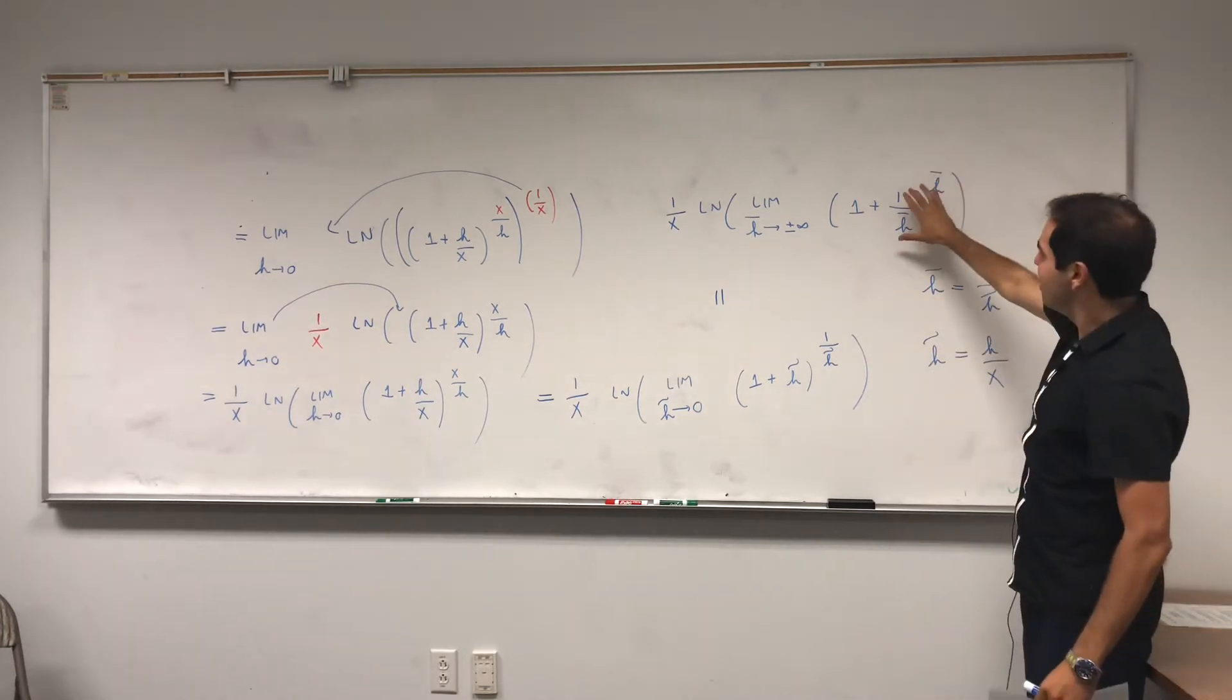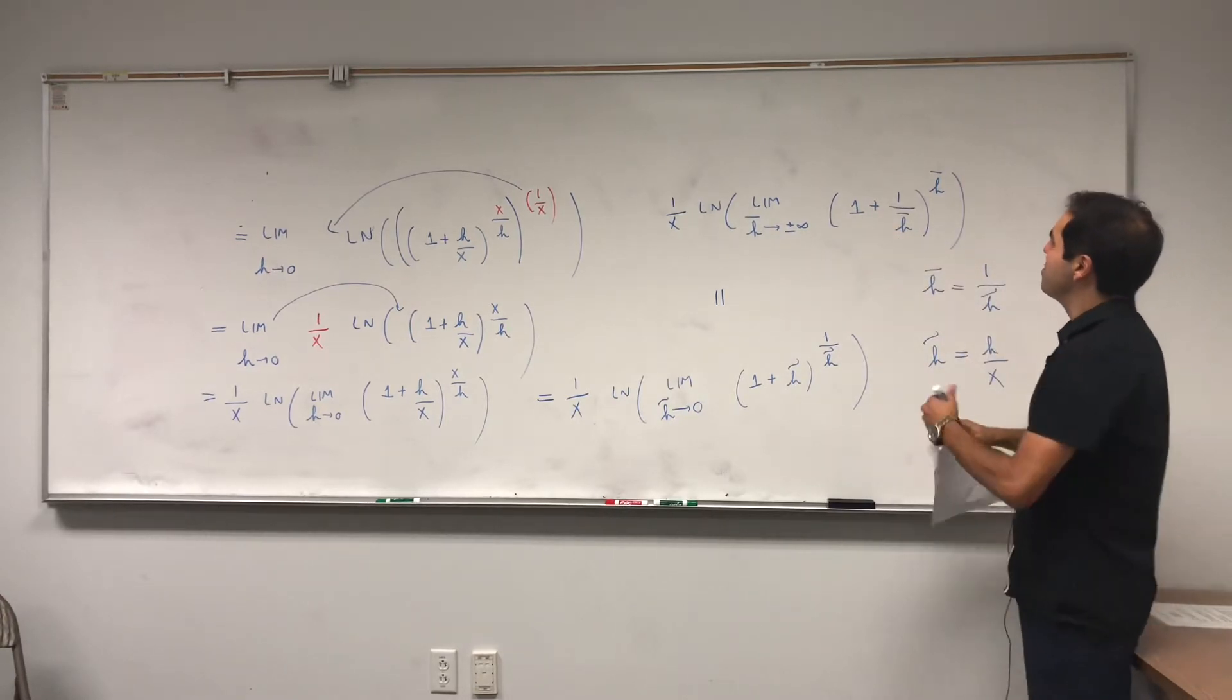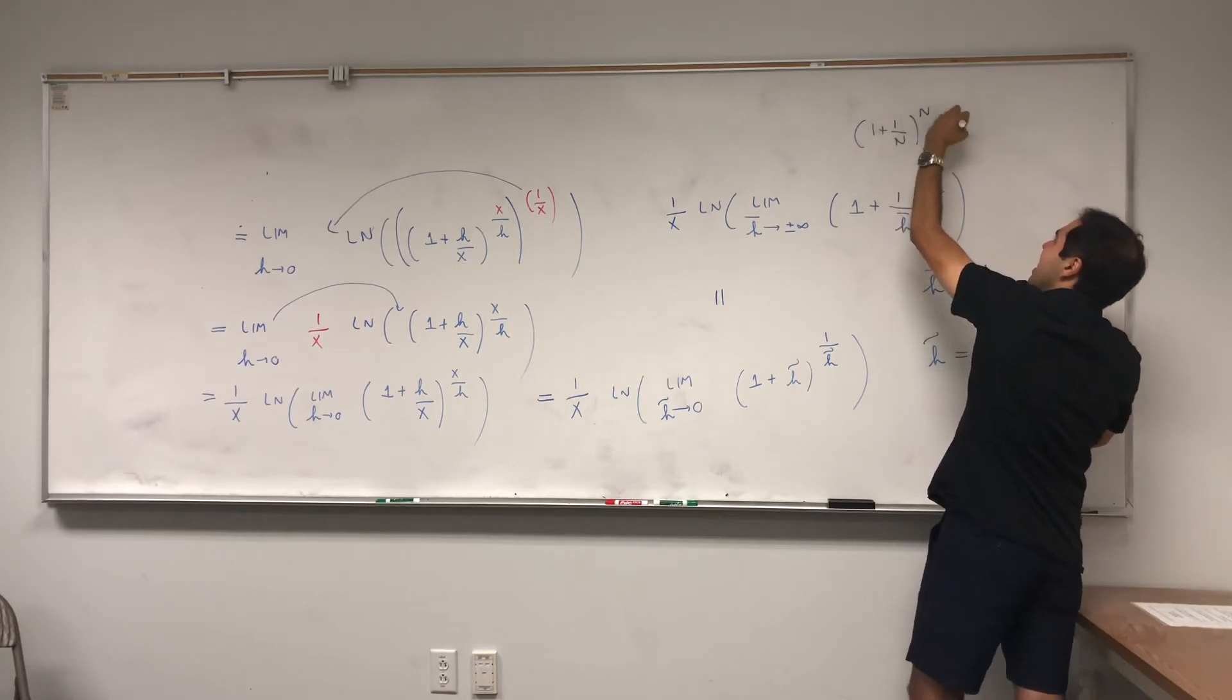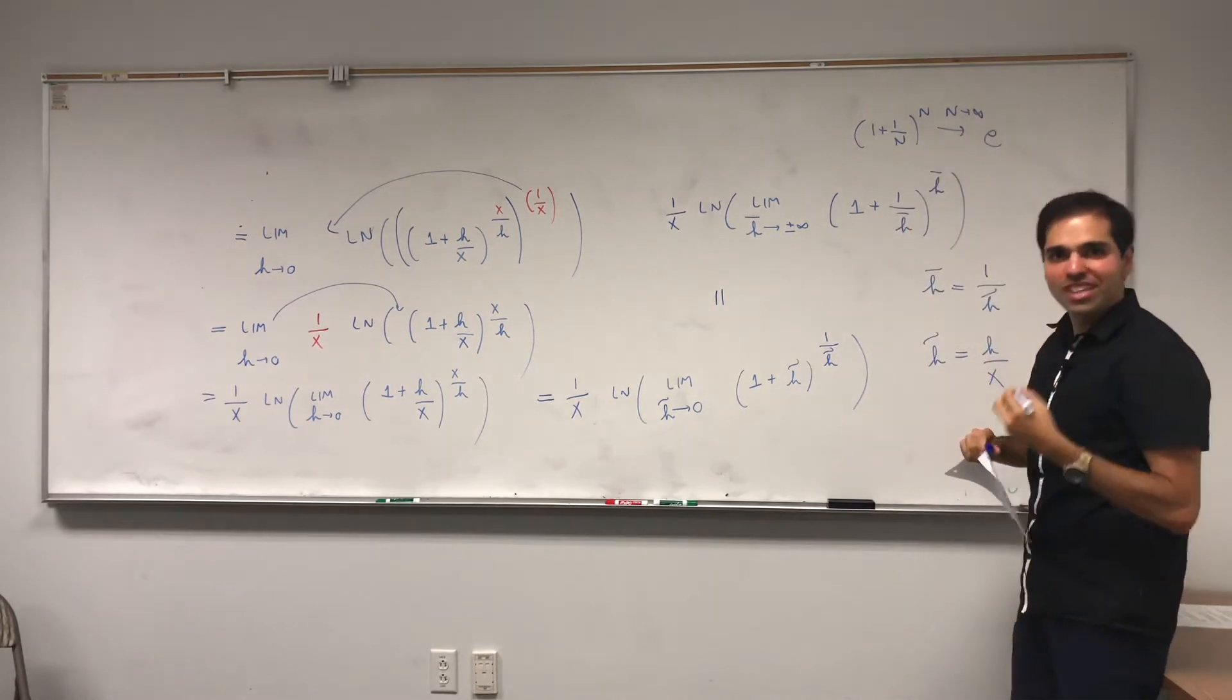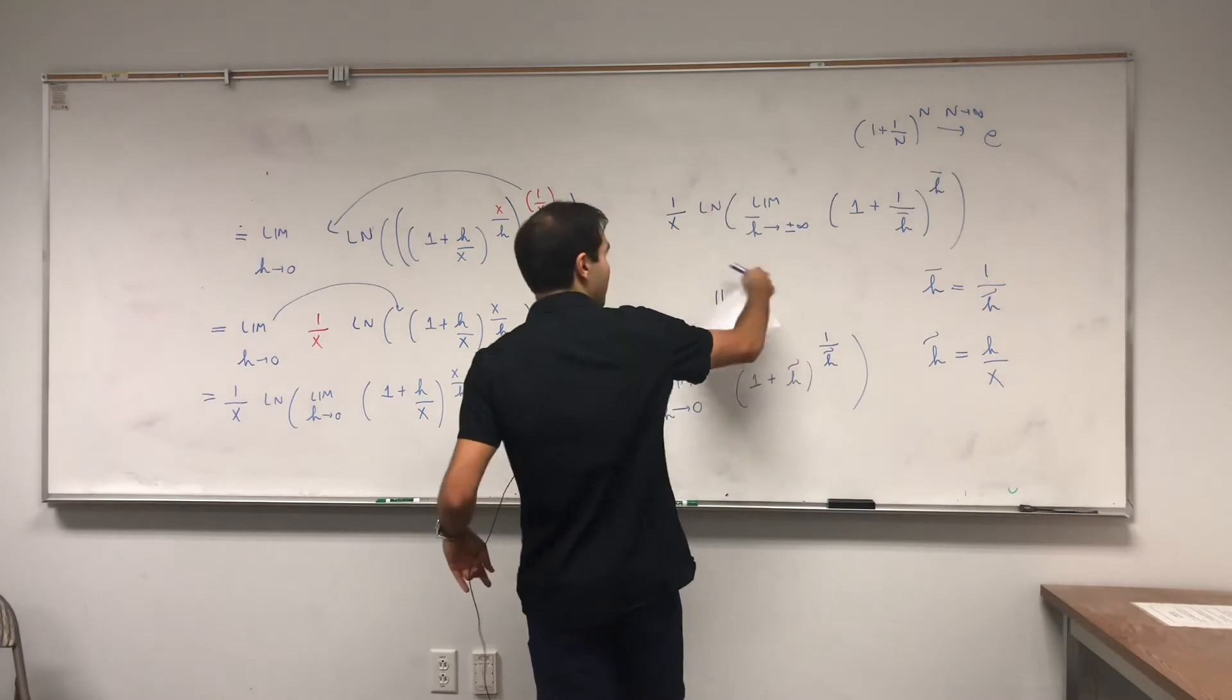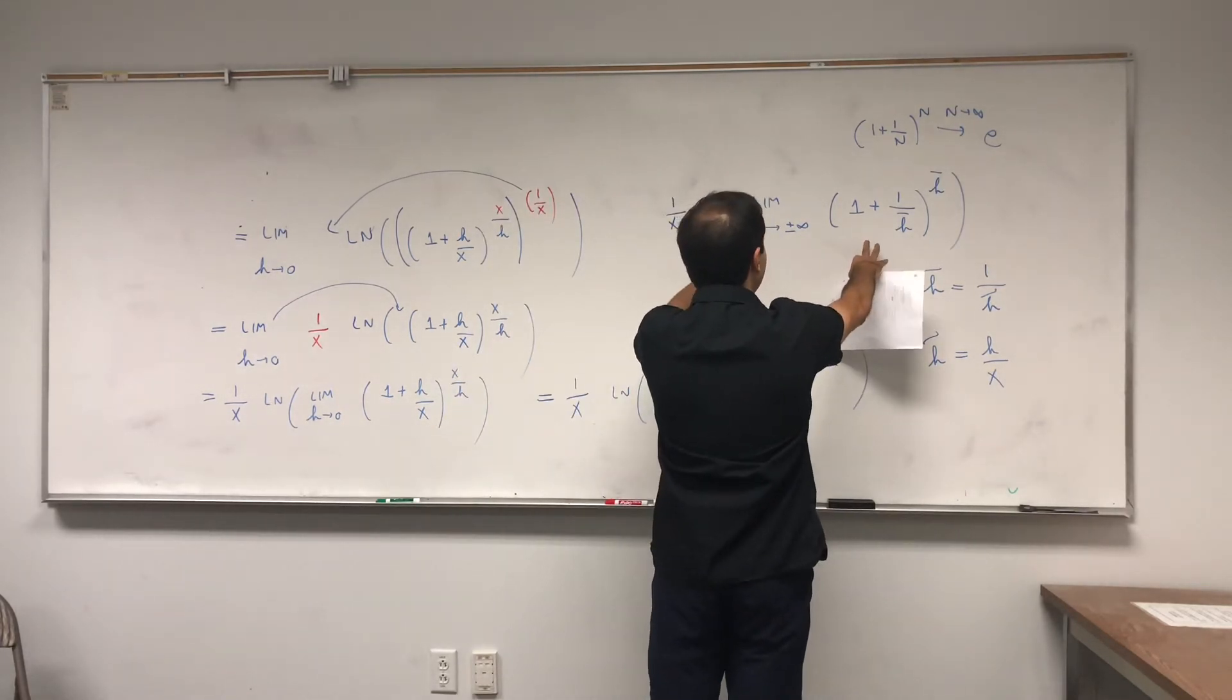This limit is a very famous limit. In fact, limit if you remember maybe from pre-calculus or something, 1 plus 1 over n to the n as n goes to infinity, it actually converges to e. And therefore what this becomes, this limit just becomes e.